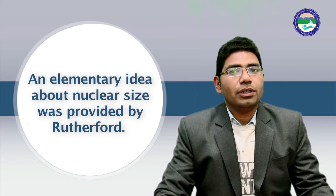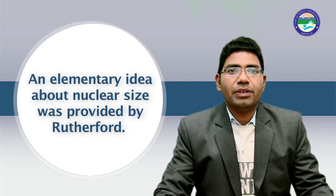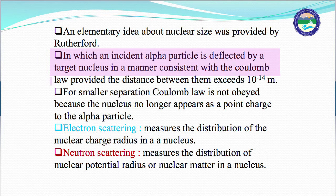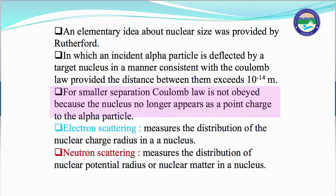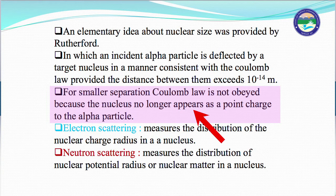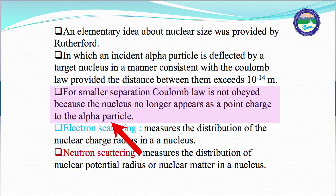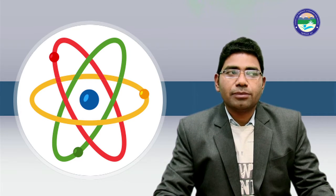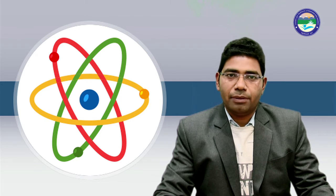This elementary idea about the nucleus size was provided by Rutherford, in which an incident alpha particle is deflected by a target nucleus in a manner consistent with Coulomb's law. This is provided the distance between them exceeds 10 to the power minus 14 meter. For smaller separations, Coulomb's law is not obeyed because the nucleus no longer appears as a point charge to the alpha particle.